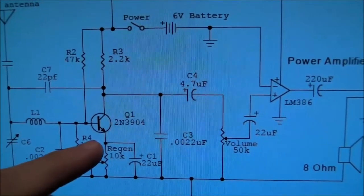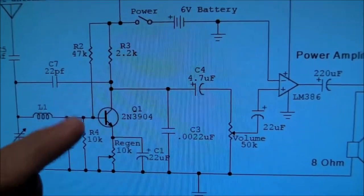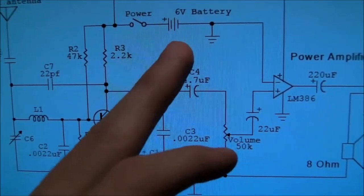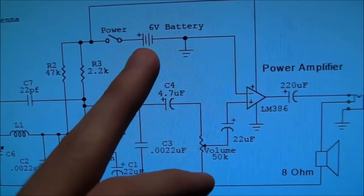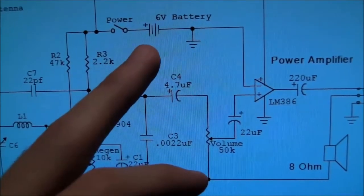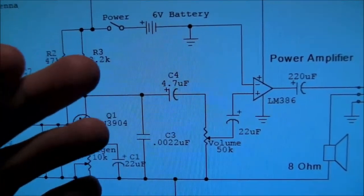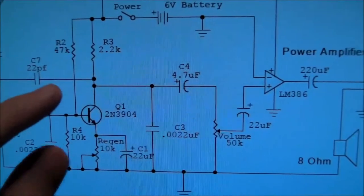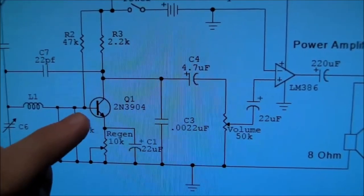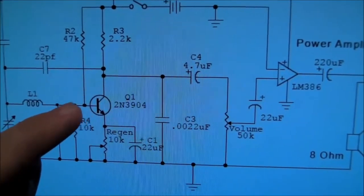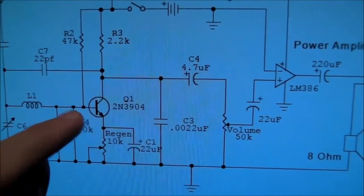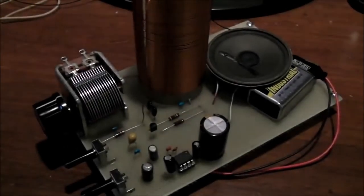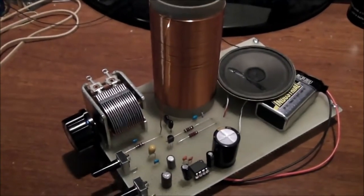But in this case, because this transistor is going into oscillation, we could be running off of, this says 6 volt battery, the original article said a 9 volt battery. So there's all this potential variation in what this bias voltage on this transistor can be. So I had a lot of trouble with this circuit when I first built it. It would just sit there and squeal constantly, couldn't get any stations in at all.